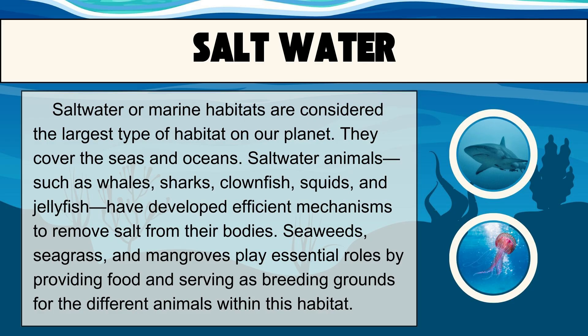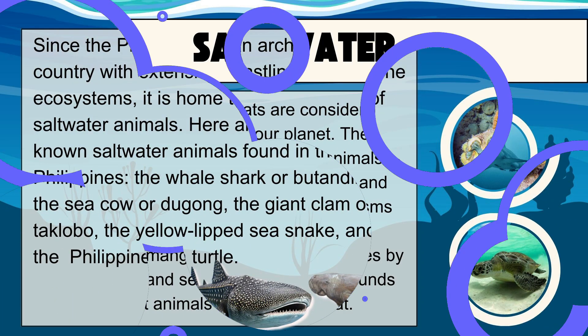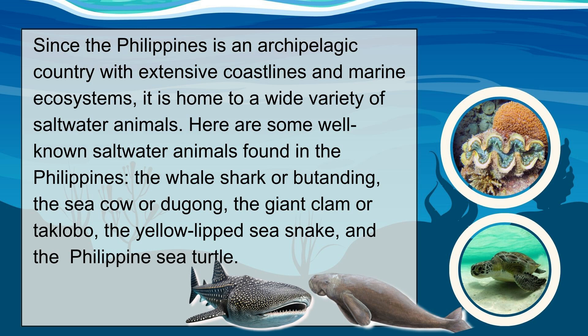Saltwater or marine habitats are considered the largest type of habitat on our planet. They cover the seas and oceans. Saltwater animals such as whales, sharks, clownfish, squids, and jellyfish have developed efficient mechanisms to remove salt from their bodies. Seaweeds and mangroves play essential roles by providing food and serving as breeding grounds for the different animals within this habitat. Since the Philippines is an archipelagic country with extensive coastlines and marine ecosystems, it is home to a wide variety of saltwater animals, including the whale shark or butanding, the sea cow or dugong, the giant clam or taklobo, the yellow-lipped sea snake, and the Philippine sea turtle.